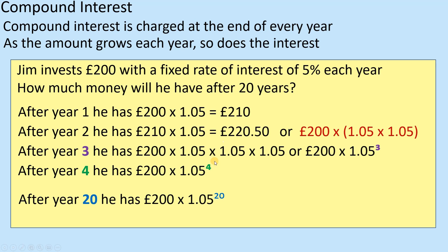As you progress, you're no longer doing this big step-by-step calculation. You're now using indices — knowing that you've timesed it by 1.05 twenty times to give you your solution. So after 20 years, it's 200 times this decimal multiplier to the power of 20, and the power is the number of years.